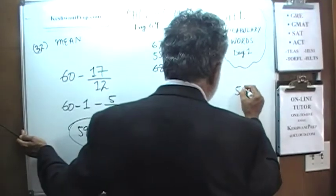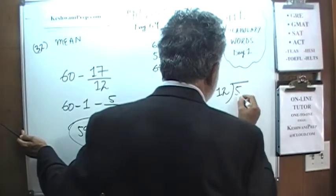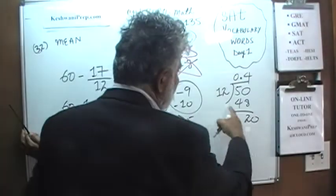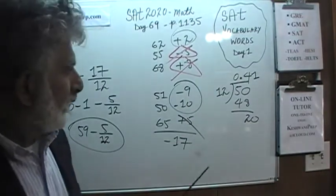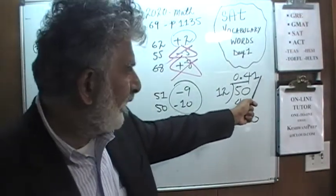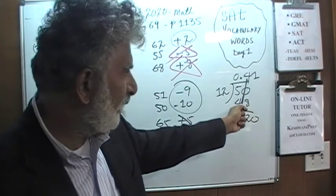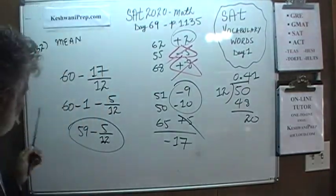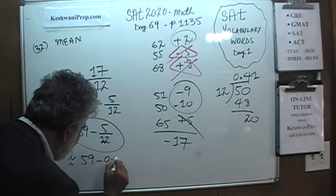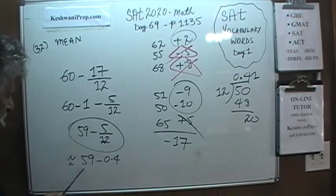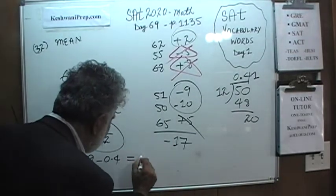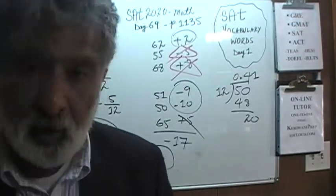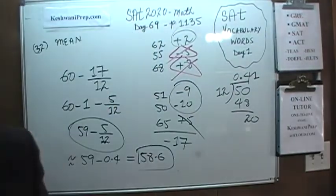Let's do it right here. 5 divided by 12. So introduce a decimal. We get a 50. That's a 4. That's a 48. Here we get a 20. If we introduce a 0, 20 divided by 12 will only give us 1. You don't have to continue any more than that. Even if it's more than 5, this will only become 0.42. When you round it to the nearest tenth, it's just 0.4. This is approximately 59 minus 0.4. 59 minus 0.4 is 58.6 is what we need to grade in.